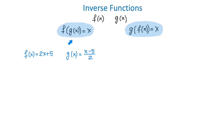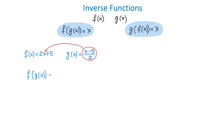First, we will verify that f of g of x equals x. In this operation we have the f function and the g function is the input for the f function. This means that in the f function we will replace x with x minus 5 over 2. So we bring down 2, and in place of x we write x minus 5 over 2, then bring down plus 5. In this expression the 2's cancel, giving x minus 5 plus 5, and the negative 5 and positive 5 cancel, leaving x. So we showed that f of g of x is indeed equal to x.